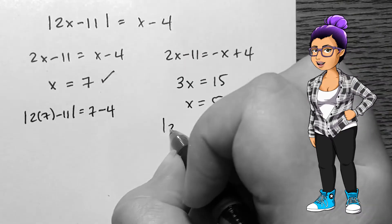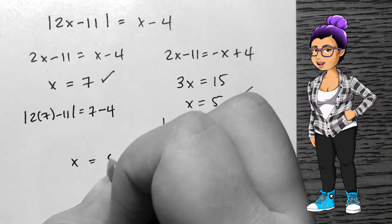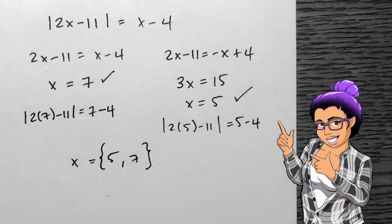When we set it equal to the positive version, x equals 7. When we set it equal to the negative version, x equals 5. I check my solutions again, and they work.